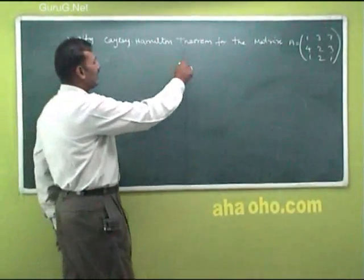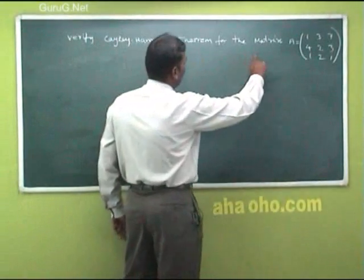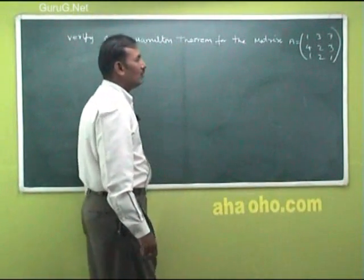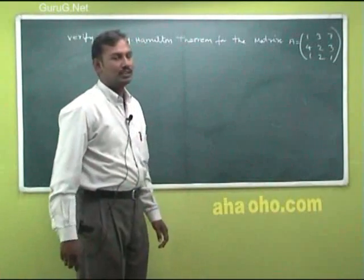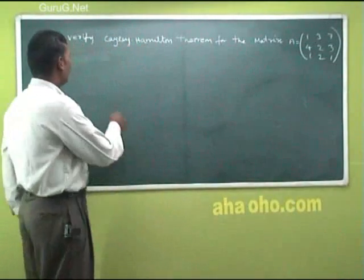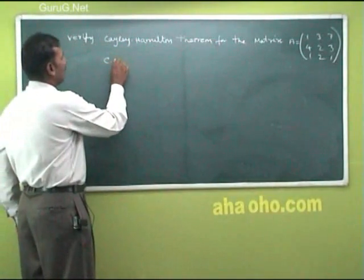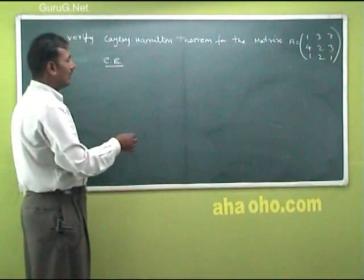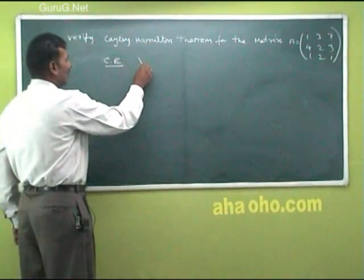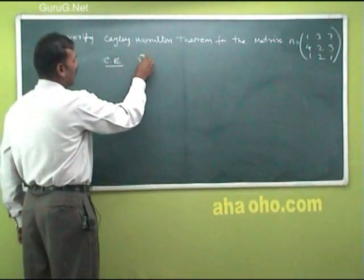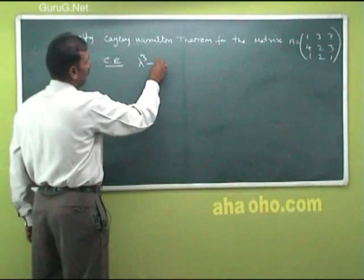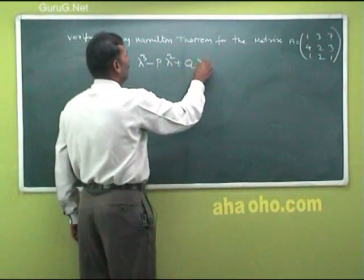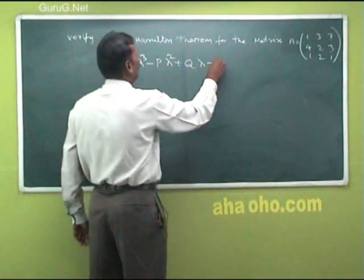Verify the Cayley-Hamilton Theorem for the matrix A = [1, 3, 7; 4, 2, 3; 1, 2, 1]. First we find the characteristic equation. The given matrix is of order 3, so the characteristic equation is lambda cubed minus P·lambda squared plus Q·lambda minus R = 0.